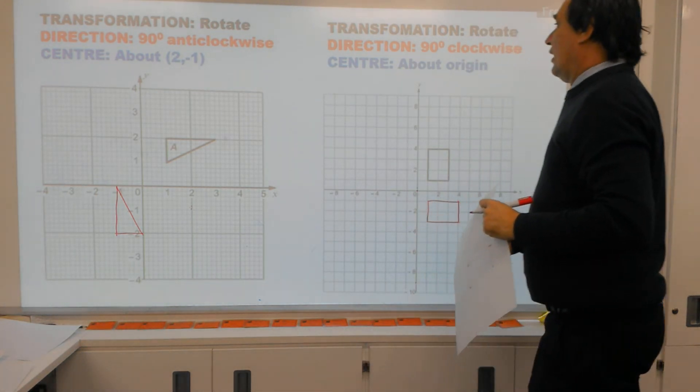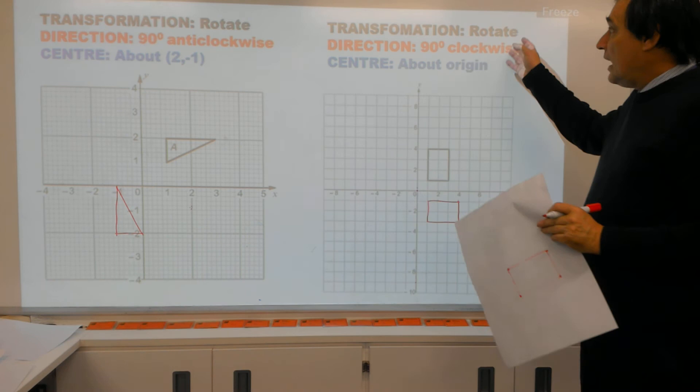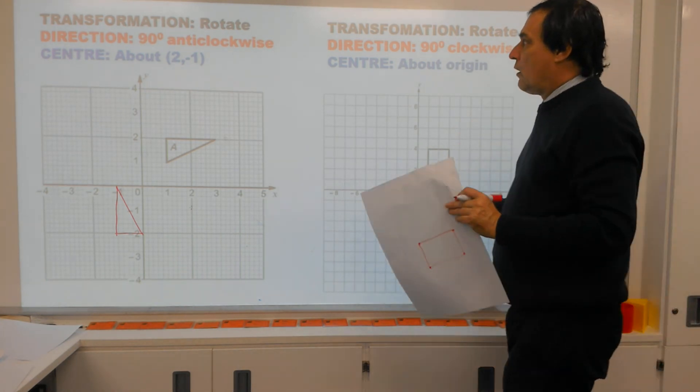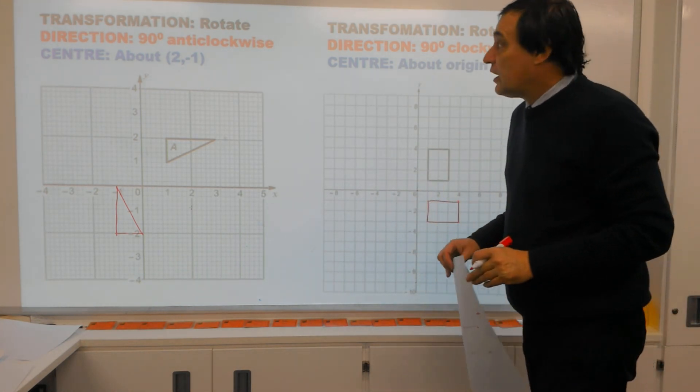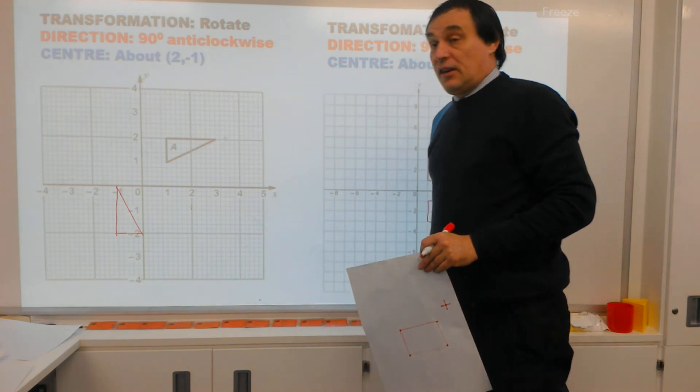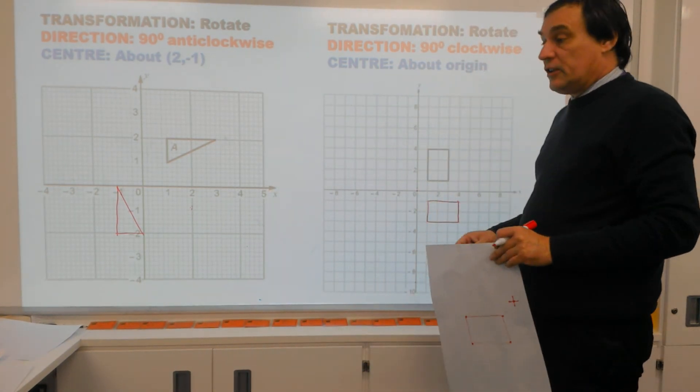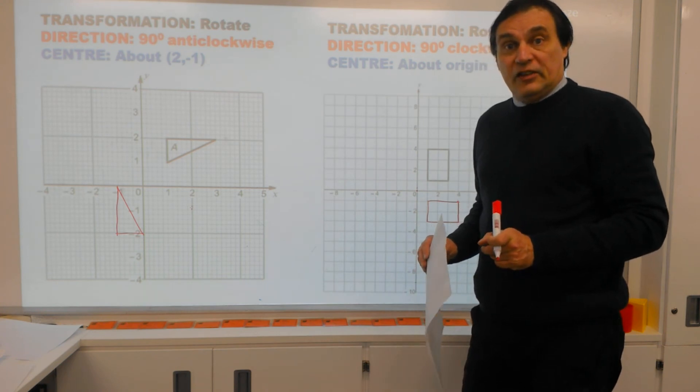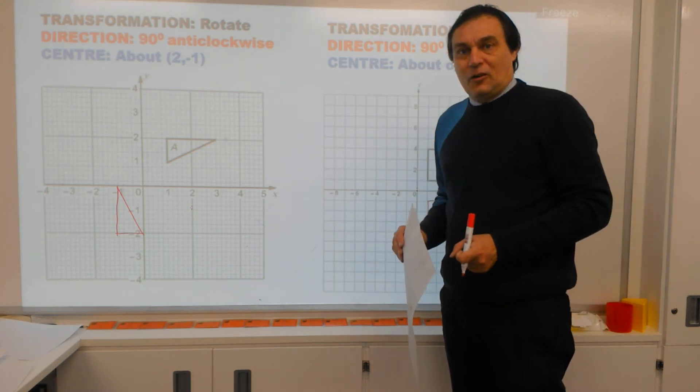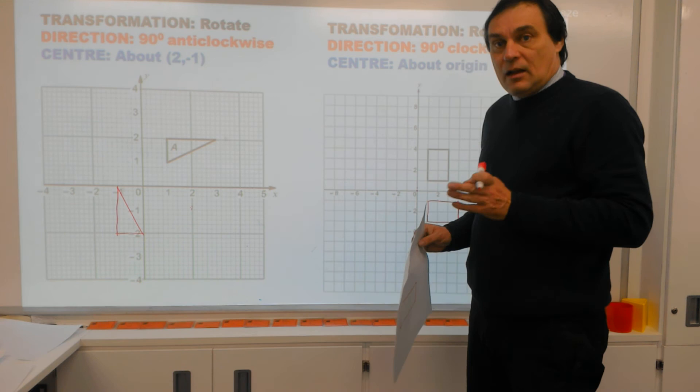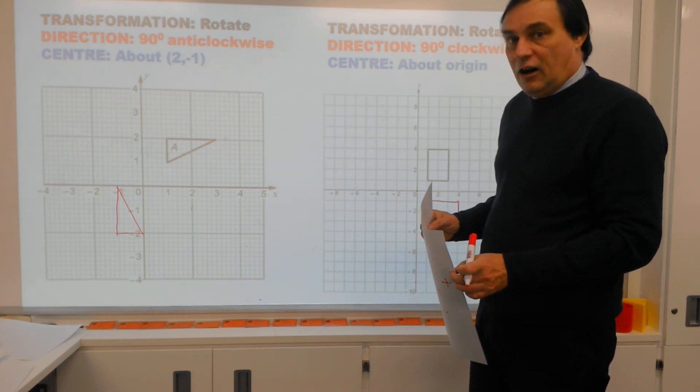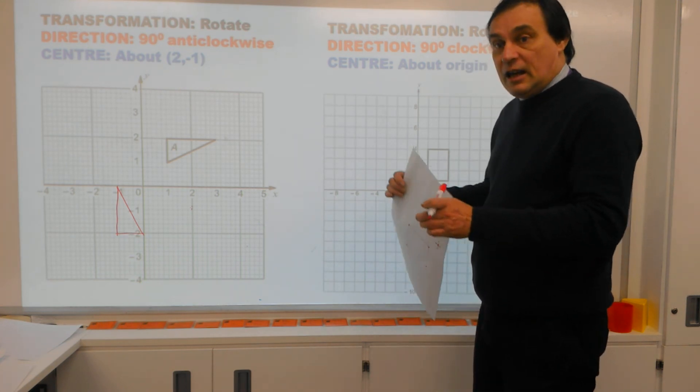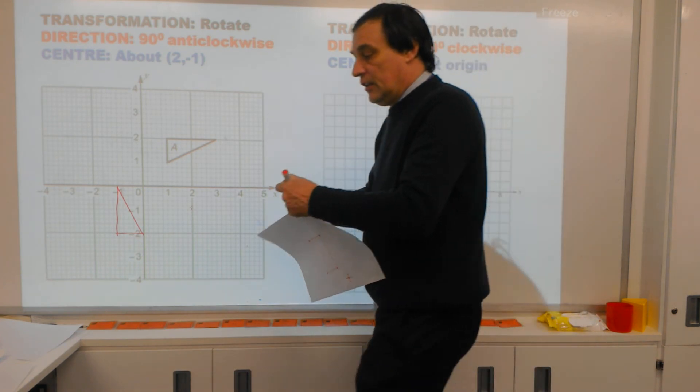Now, one final thing that I'll mention is there are actually three ways in which you can rotate a shape: 90 degrees anticlockwise, 90 degrees clockwise, or sometimes they say 180 degrees and don't say clockwise or anticlockwise, because remember, 180 degrees would be exactly halfway. So if you see 180 degrees, this is what you'll do.